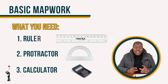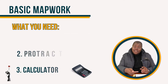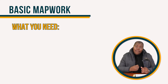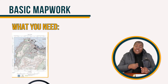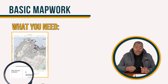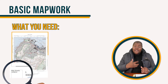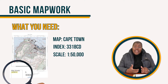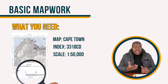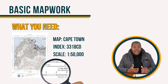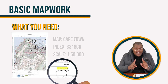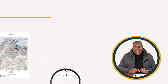What I suggest is go into the description section below, find the map that we'll be doing, which is the Cape Town map with the index of 3318CD with the scale of 1 to 50,000, and print it out. Let's do this together.